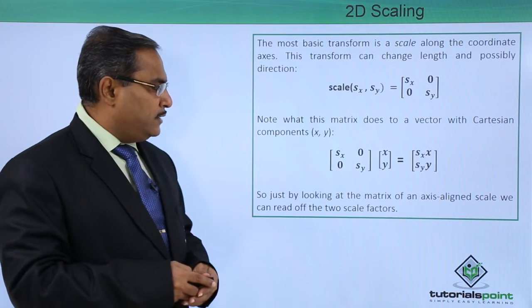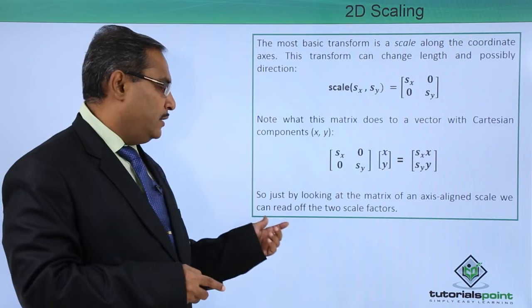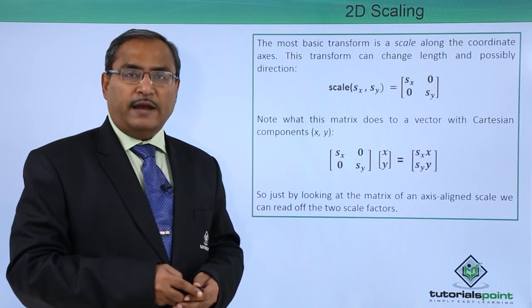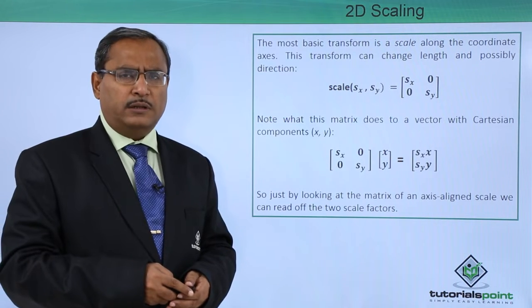Just by looking at the matrix of an axis-aligned scale, we can read off the two scale factors. I think it will be better if we go for one example for better understanding.